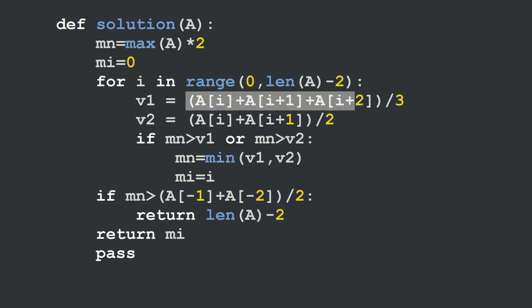And we're going to calculate two averages, one for a three element slice and another one for a two element slice. And then I'm going to test if the current minimum value is higher than v1 or higher than v2. Then in this case, I'm going to replace the value of the minimum by the minimum value between v1 and v2. And also I will not forget to keep the index i into my variable mi, which will be holding the starting position of the minimum average slice.